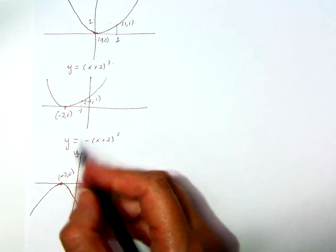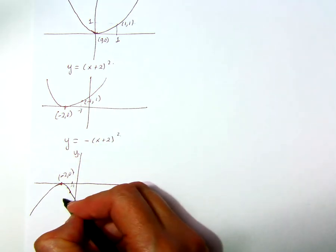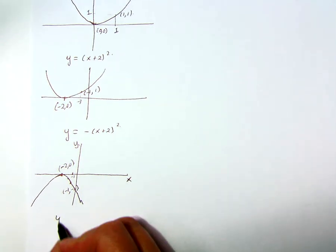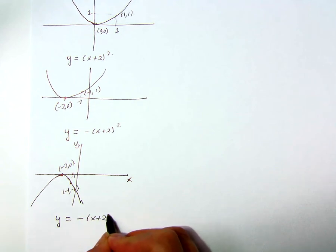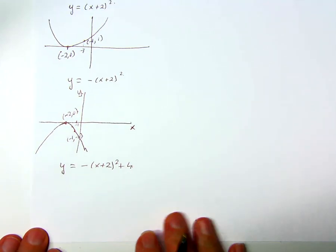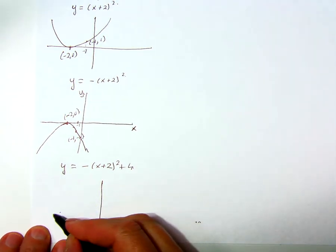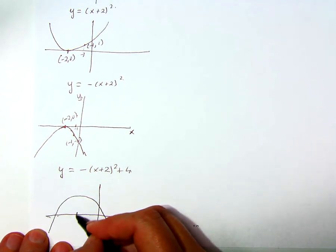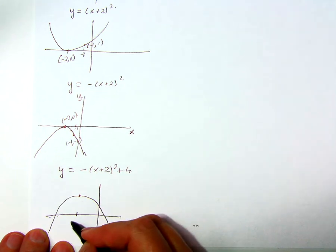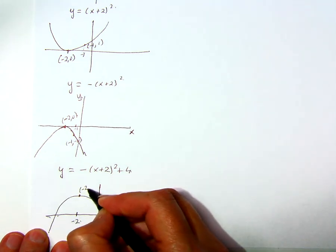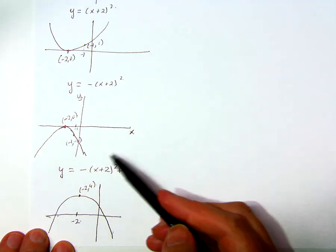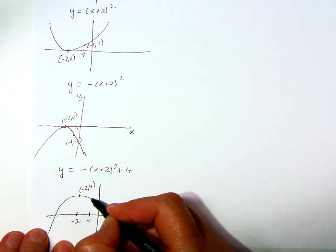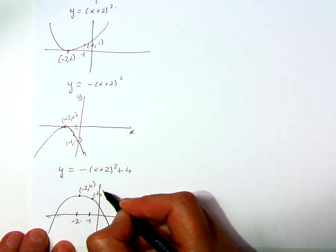And the point negative one one now goes to negative one negative one. And lastly, I'm going to shift this thing upwards by four units. That's this downward facing parabola gets shifted upwards by four units. Its vertex is now at minus two zero plus four, so it's minus two four. And this point negative one negative one gets shifted upwards to negative one and negative one plus four, which is three.